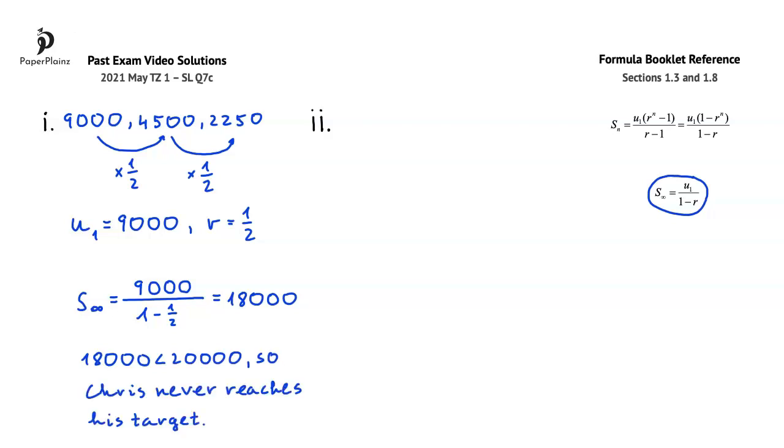In the second part of this question, Chris wants to reach his target in 5 years. We have to find the initial deposit that Chris should make in order for this to happen. Since Chris is following the same strategy as we described in Question Part 1, here we are still working with a geometric sequence. We are looking for the initial deposit, which in our sequence is the first term, so u1.